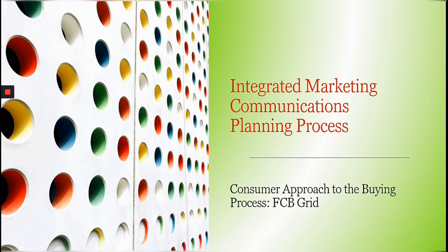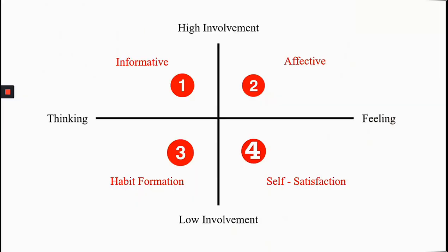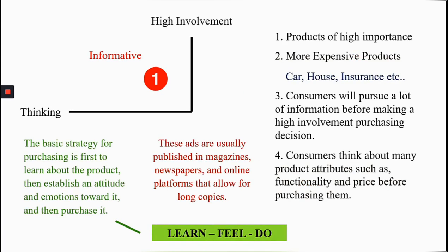In this video we will learn about a communication model known as the FCB Grid. This model clarifies how consumers approach the buying process for different types of products. Four quadrants are developed based on two dimensions: high versus low involvement, and thinking versus feeling. The quadrants summarize four major goals for advertising strategies: being informative, being affective, forming a habit, and promoting self-satisfaction.